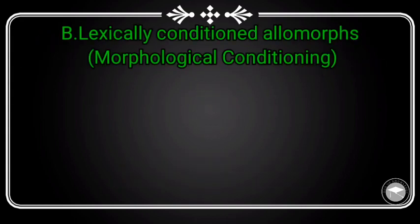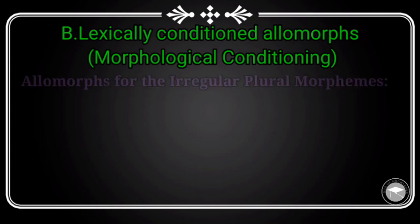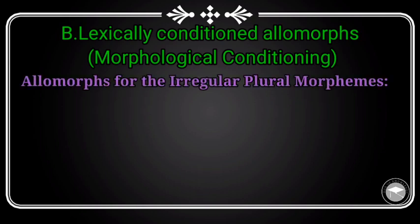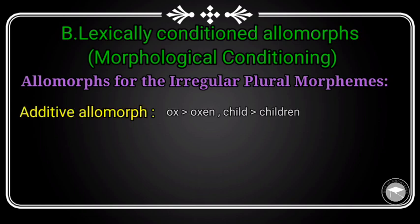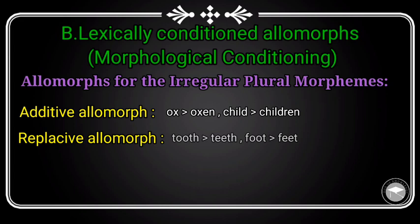النوع الثاني هو lexically conditioned allomorphs، اللي كيتسماو كذلك suppletive conditioned allomorphs. هنا التغيير كيوقع في الـ lexicon ديال الكلمة، ماشي غير في الصوت. غادنشوفو الحالات الاستثنائية ديال plural وديال past tense. بالنسبة للـ plural، يقدر نديروه بالإضافة ديال شي حاجة للكلمة وكيتسمى additive allomorph، مثال: ox كتولي oxen، child كتولي children. ولا كان بدلو شي حاجة بحاجة أخرى في الكلمة وكيتسمى replacive allomorph، بحال: tooth كتولي teeth.